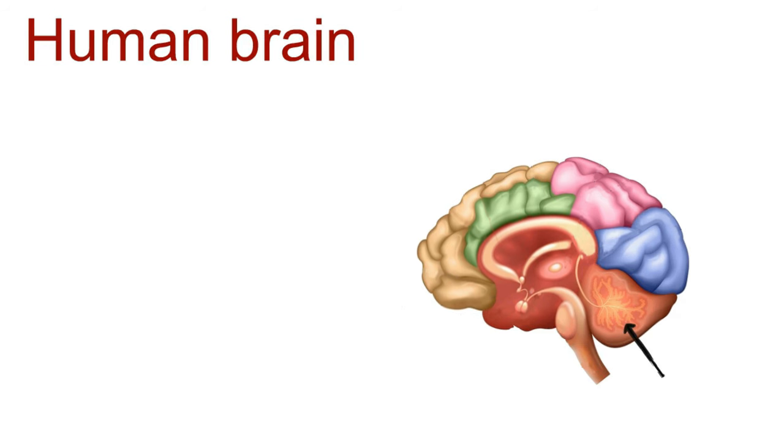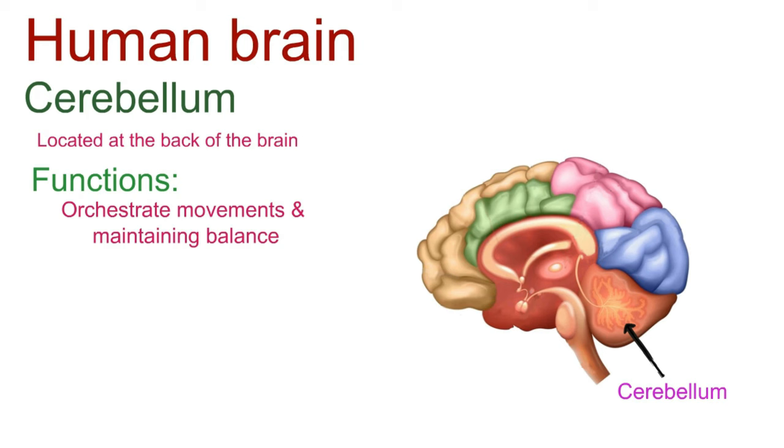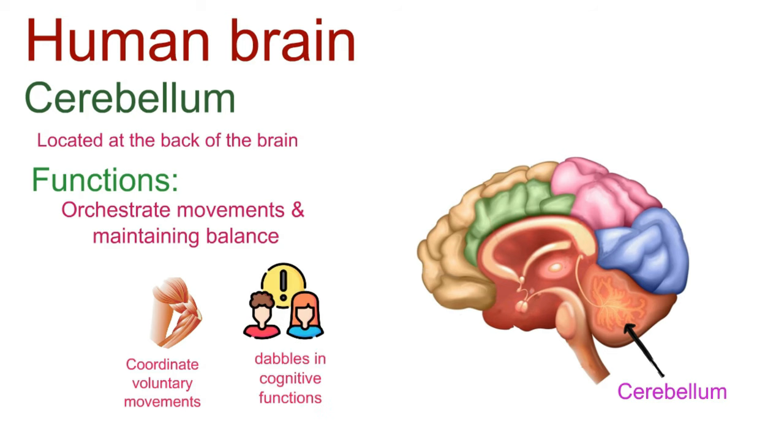Lastly, we reach the cerebellum, the master coordinator located at the back of the brain. It's like a maestro, orchestrating our movements and maintaining balance. The cerebellum excels at coordinating voluntary movements, ensuring our muscle tone is just right for smooth and precise activities. It even dabbles in cognitive functions like attention.